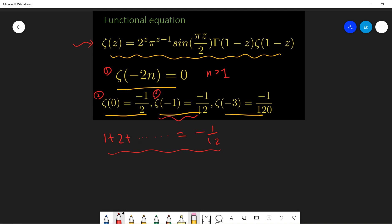The first is that ζ(0) is -1/2, ζ(-1) is -1/12, ζ(-3) is -1/120, and ζ(-2n) is 0 for n greater than or equal to 1.